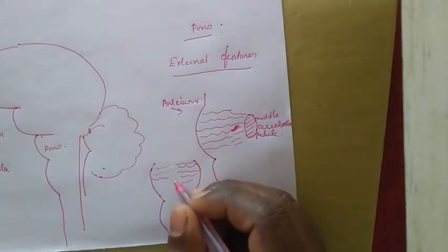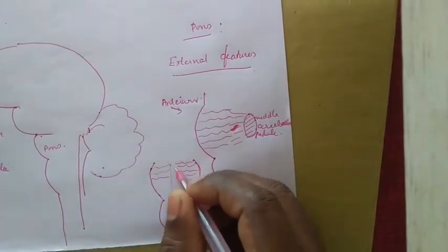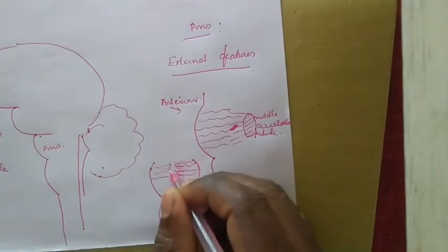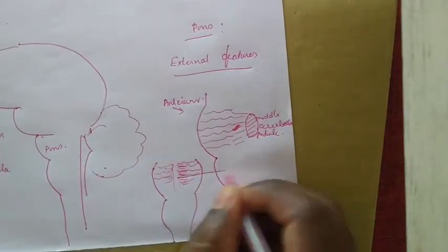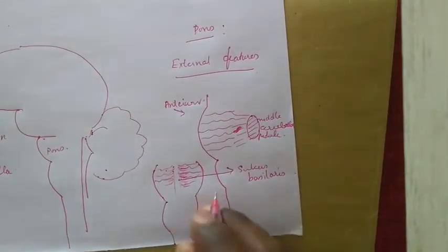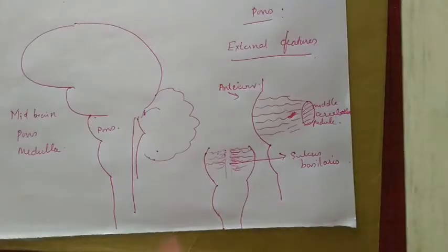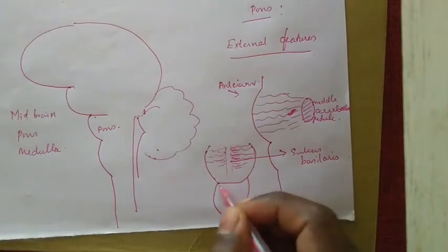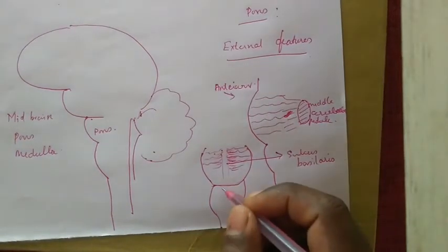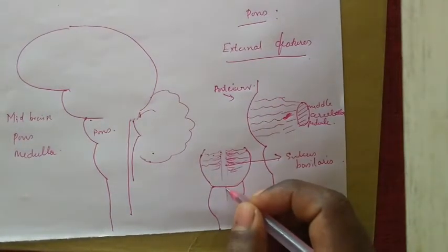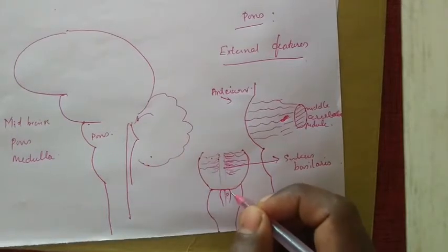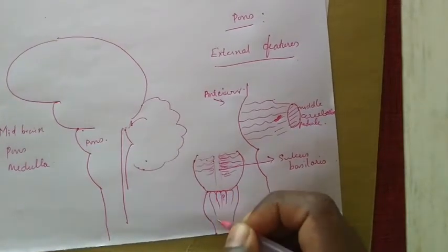On the anterior surface there is a sulcus right in the midline. This sulcus lodges the basilar artery, and hence the sulcus is called sulcus basilaris. There is a groove running transversely between the pons and the medulla. The anterior aspect of the medulla has an elevated portion in the center called the pyramid, and lateral to the pyramid we have one more elevated region called the olive.